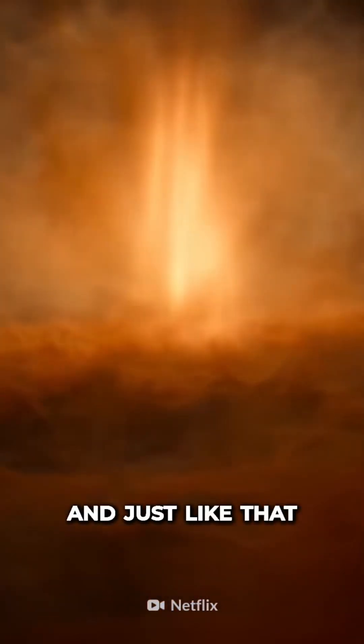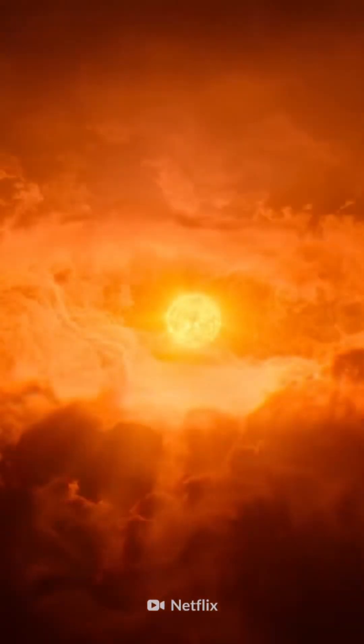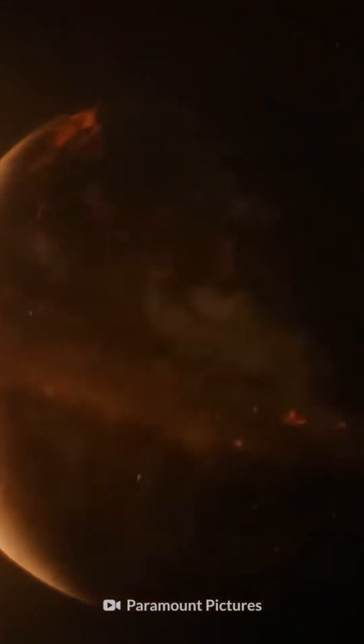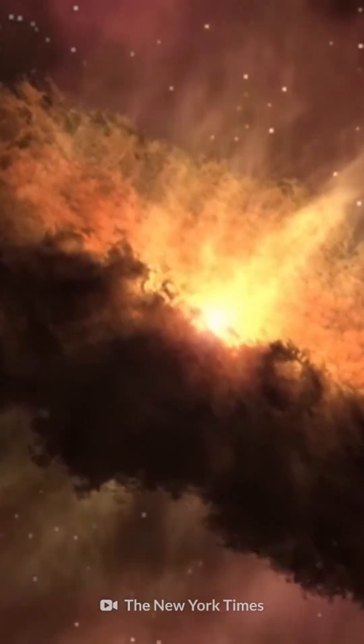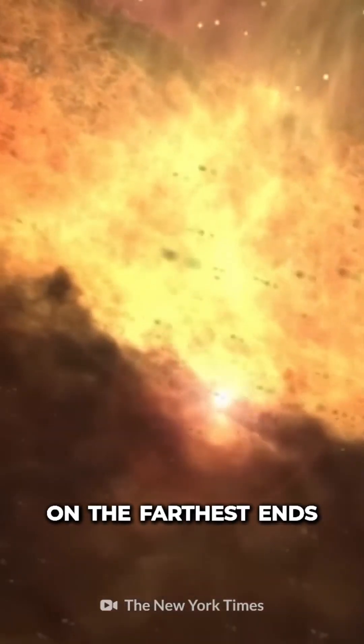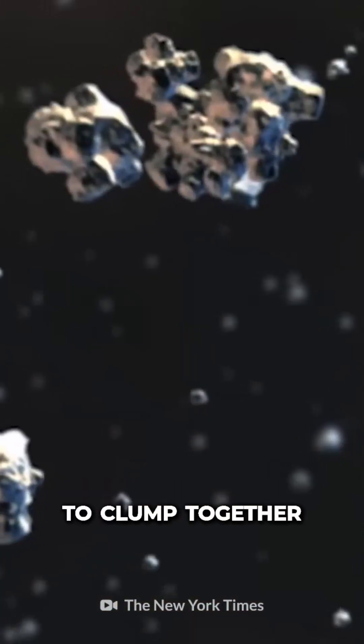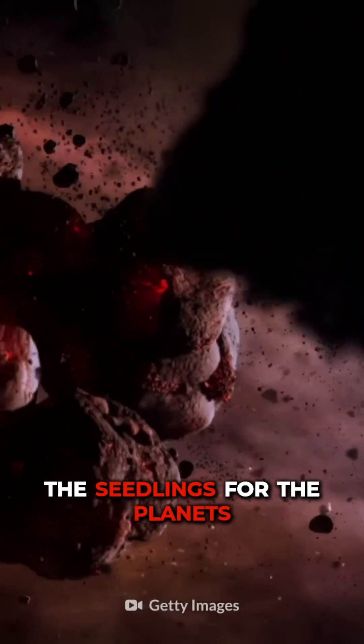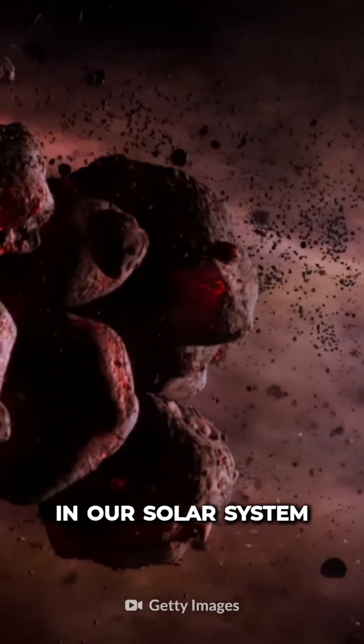And just like that, our Sun was born. And baby Earth was on its way too. After the birth of our star, all the matter on the farthest ends of the spinning disk began to clump together. These clumps would be the seedlings for the planets and moons in our solar system.